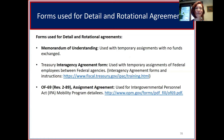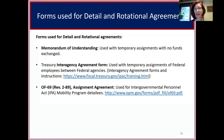There are different ways to operationalize details and rotations. If there are no funds exchanged, folks often use memorandums of understanding. If funds are exchanged, the treasury interagency agreement form is used. There's also the Intergovernmental Personnel Act (IPA) mobility program, which uses the OF-69 form, allowing personnel to be brought in for up to two years with a maximum of four years, on an intermittent, part-time, or full-time basis, reimbursable or not.